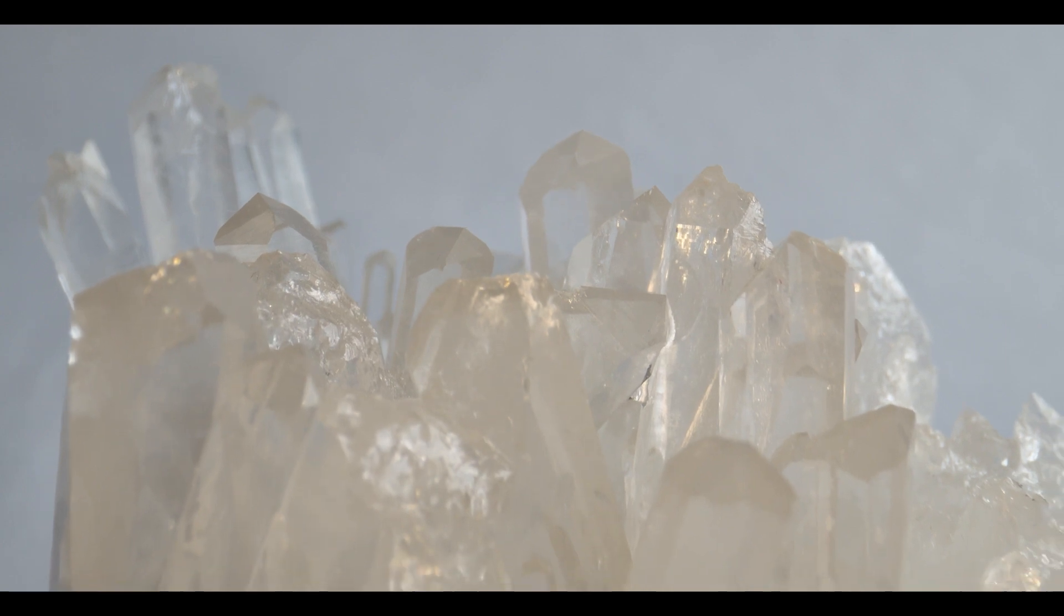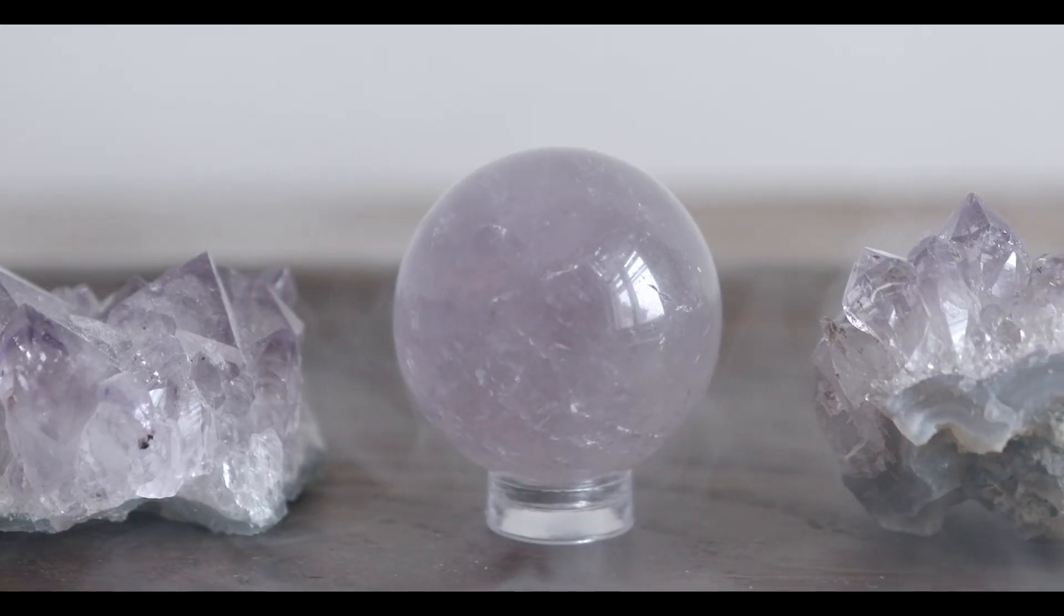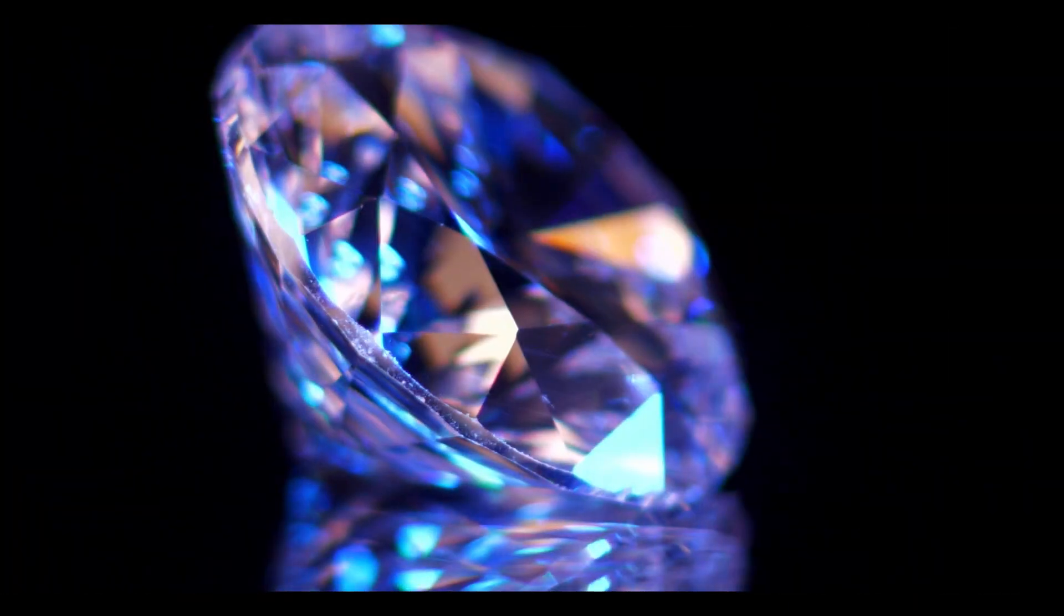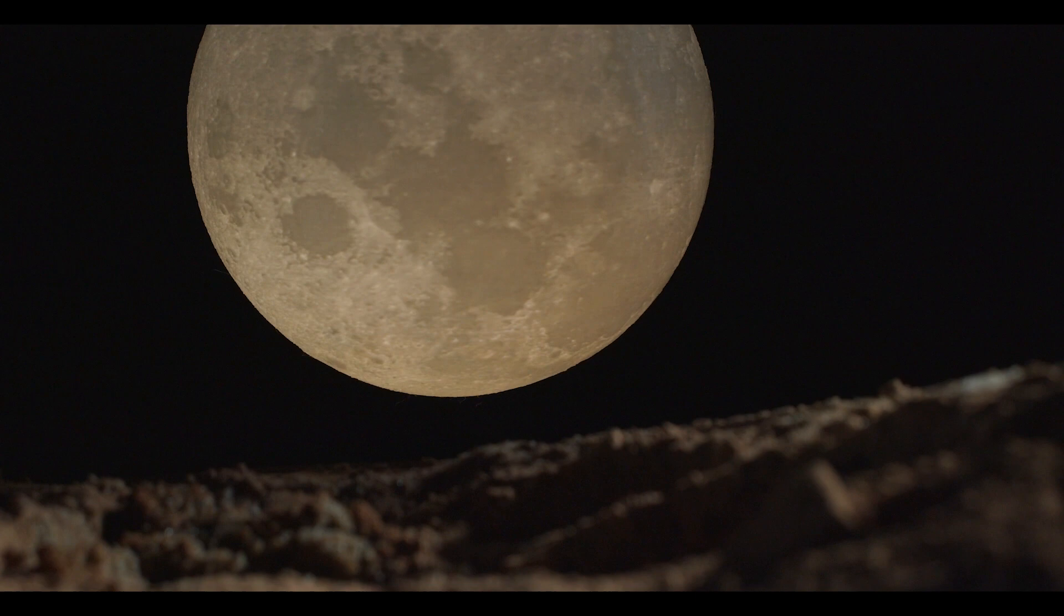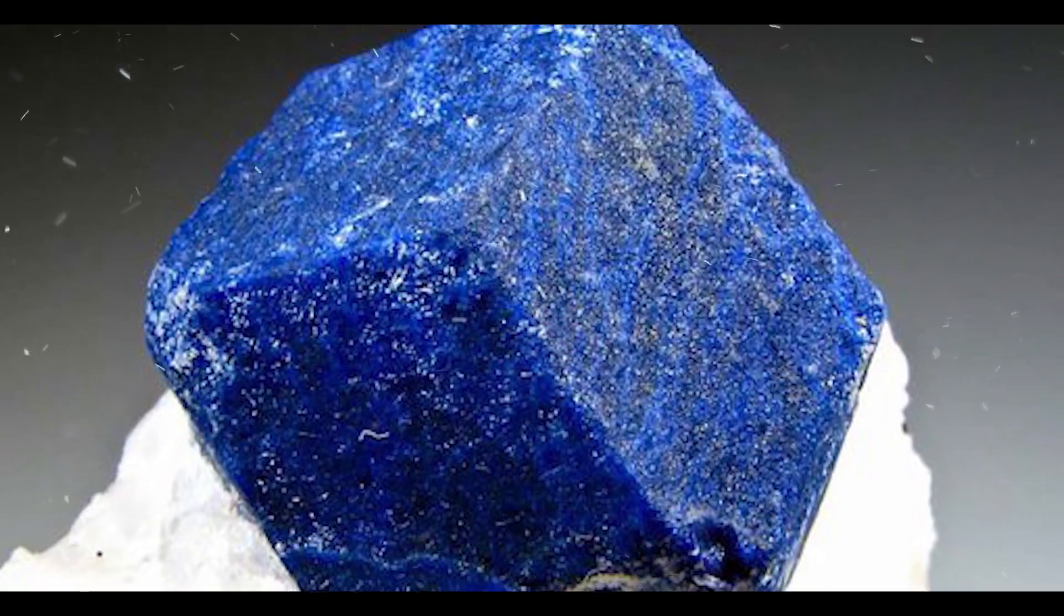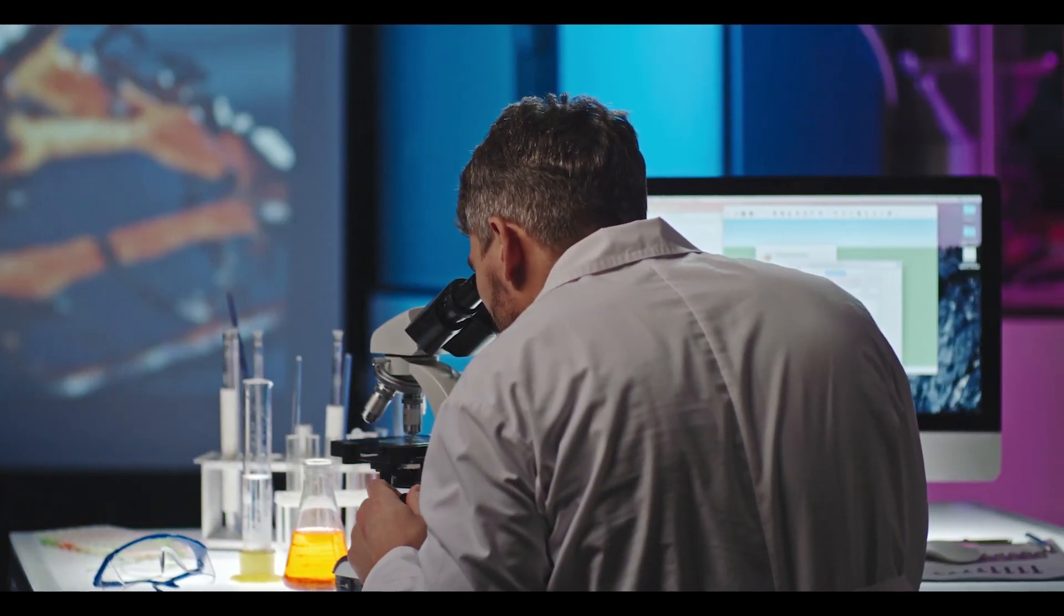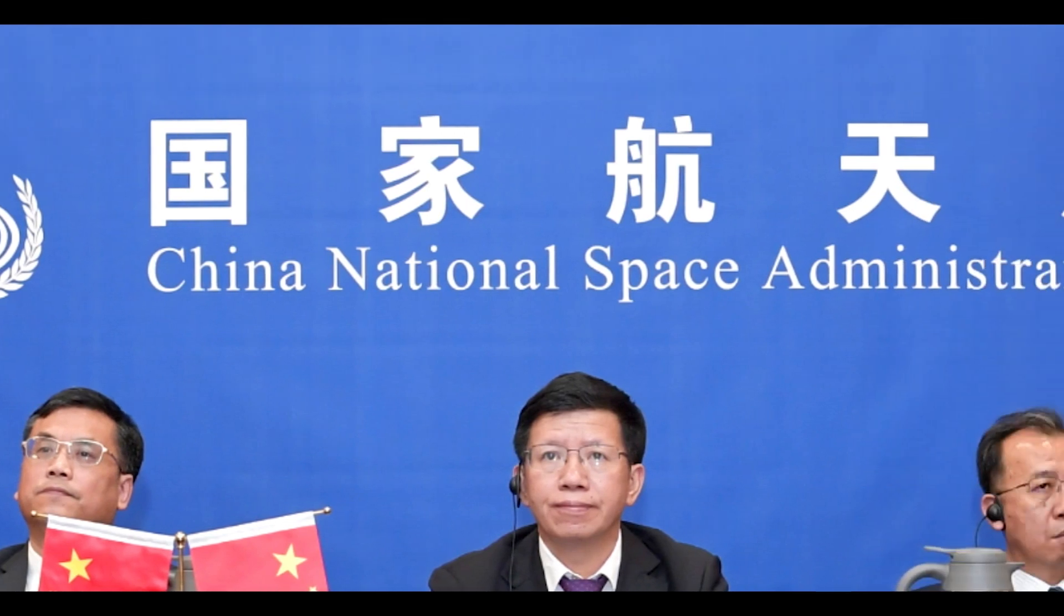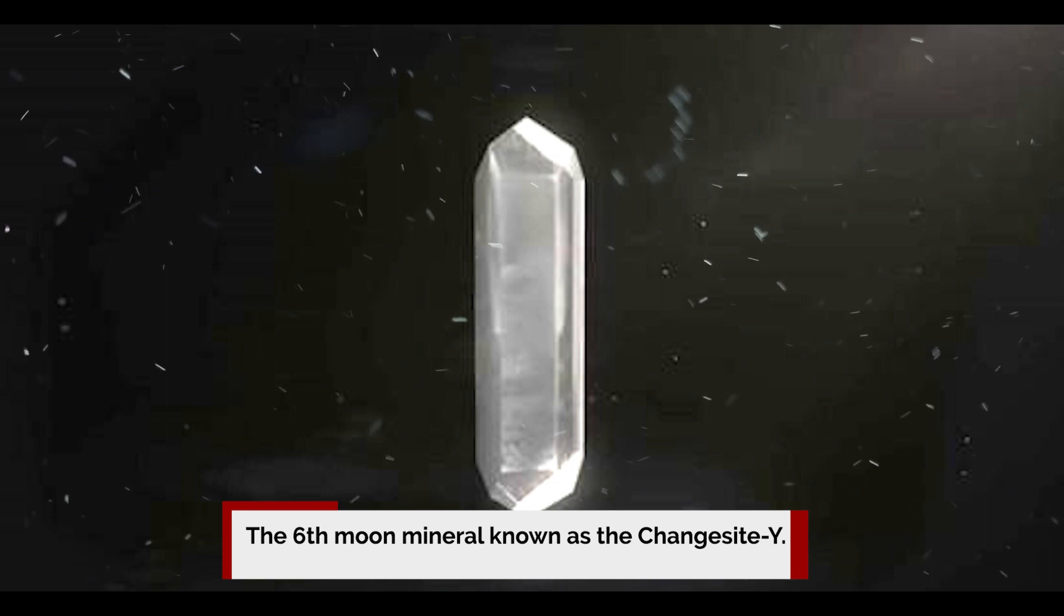Minerals are naturally occurring substances, and Earth is already home to more than 5,000 types of minerals, including diamonds and silicon. Most of the minerals that we have on Earth are also found on the lunar surface. The United States and the former Soviet Union have already discovered five of them, and the International Mineralogical Association has now confirmed that the China National Space Administration has discovered the sixth moon mineral known as the Chang'e-Site Y.